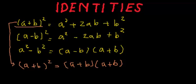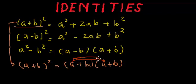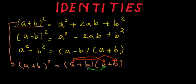While multiplying two expressions — here the two expressions are (a+b) and (a+b) — we take the first term of the first expression and multiply it to the first term, then the second term, of the second expression. Then we start with the second term of the first expression and repeat the procedure.